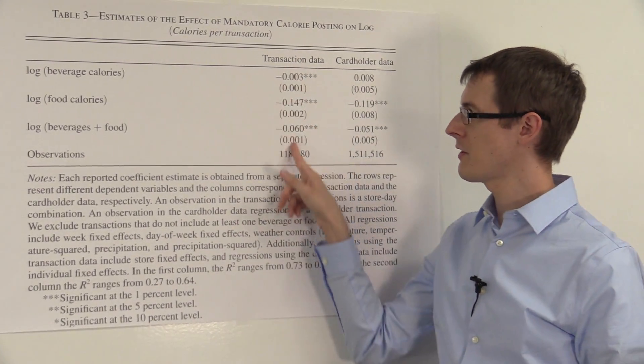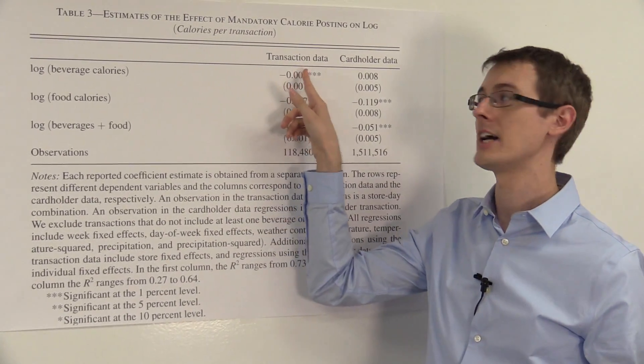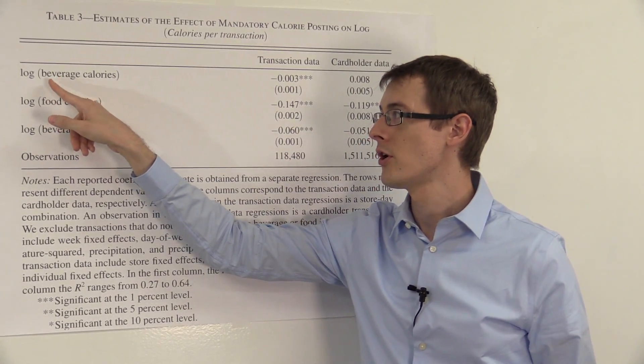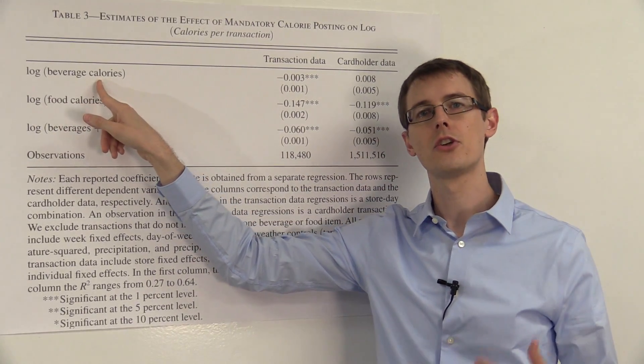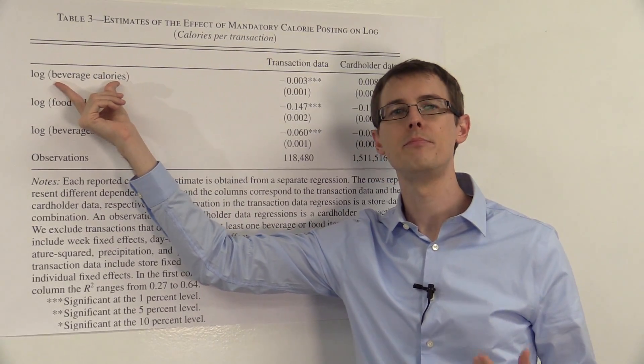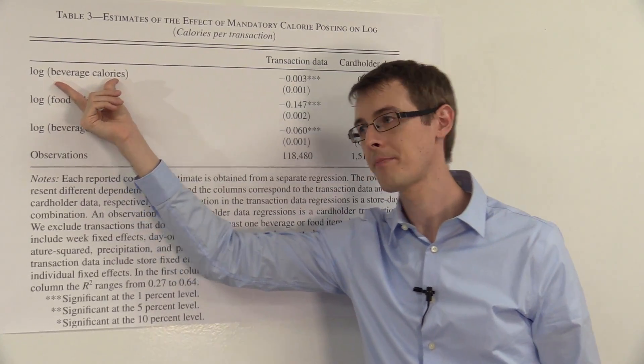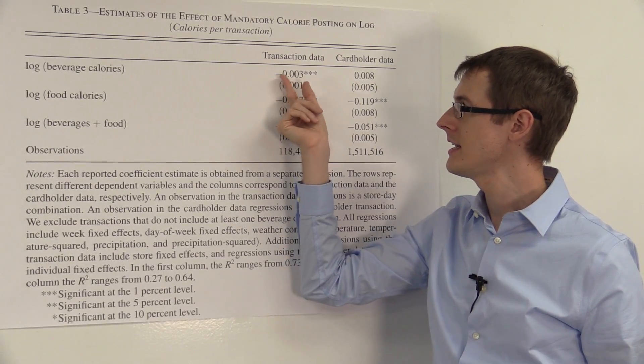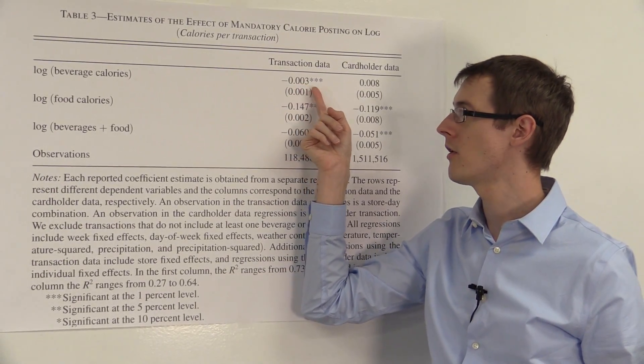So let's just look at their first data set they call the transaction data and their first outcome variable, log beverage calories. So they're looking at the logarithm of how many calories are consumed through beverages. And their estimate of the causal effect is minus 0.003.